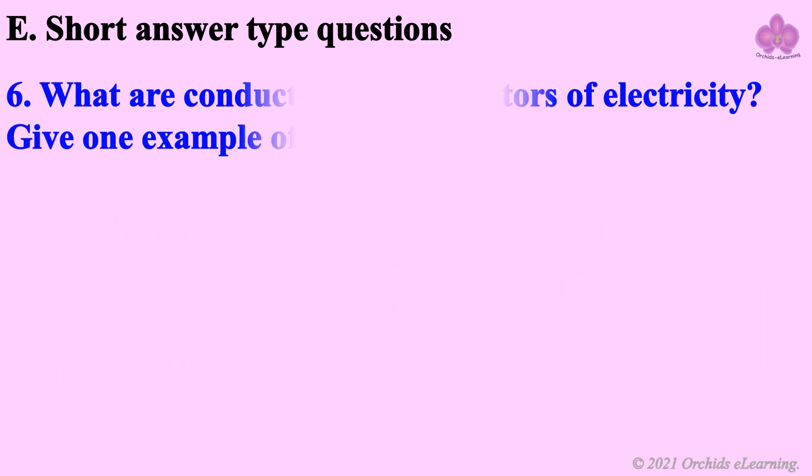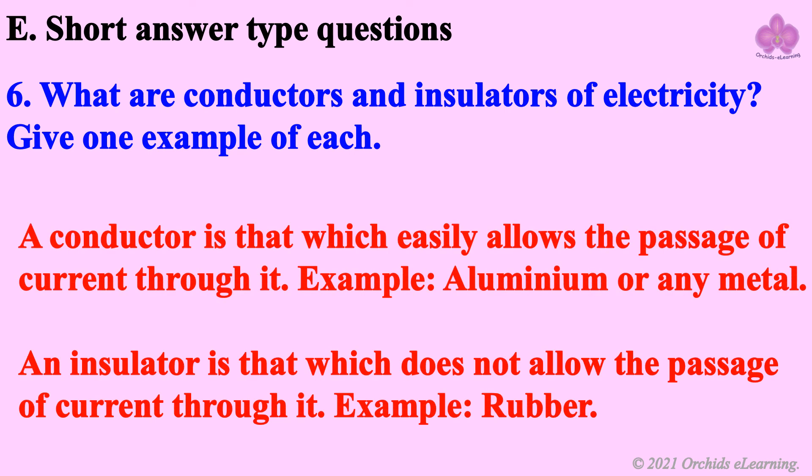What are conductors and insulators of electricity? Give one example of each. A conductor is that which easily allows the passage of current through it, example: Aluminium or any metal. An insulator is that which does not allow the passage of current through it, example: Rubber.